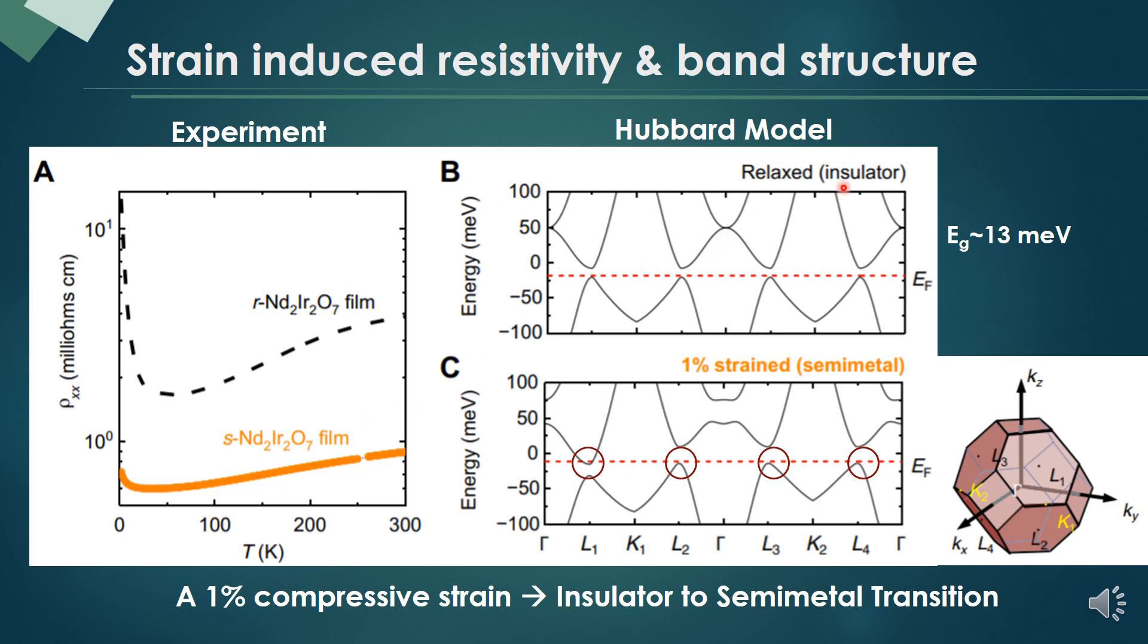This is because in the Hubbard model, the relaxed film is insulator. On the other hand, the 1% strained film should show some electrons and hole pockets in the system. Therefore, the strain makes the system semimetallic.